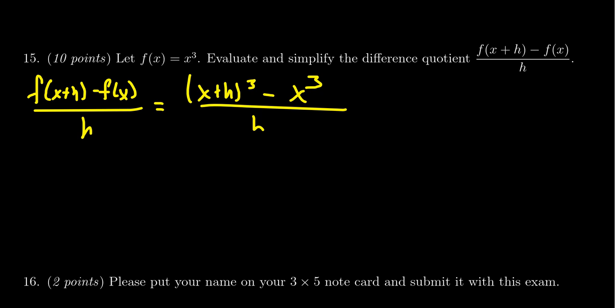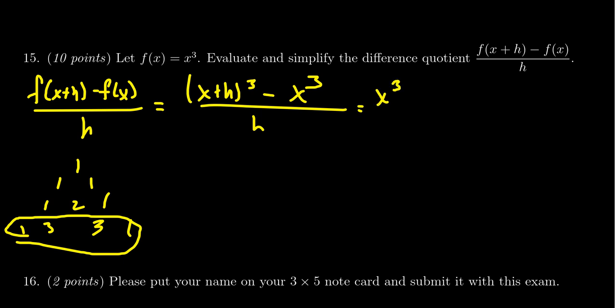Using the binomial theorem, we can reconstruct Pascal's triangle here. When you take x plus h cubed, the coefficients are going to be 1, 3, 3, 1. This would expand to be x cubed plus 3 x squared h plus 3 x h squared plus h cubed minus x cubed all over h.